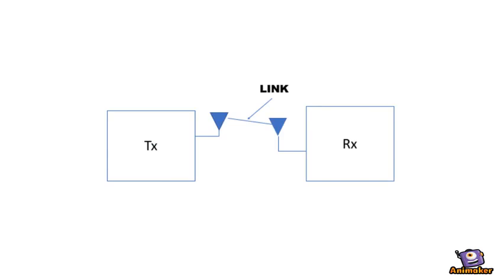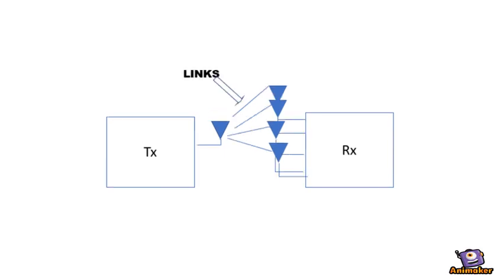In case of one transmitting antenna and one receiving antenna, we have only one direct link. And if this direct link is in deep fade, we lose our signal.